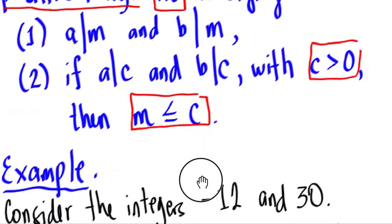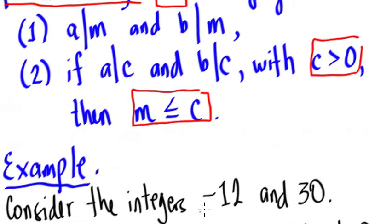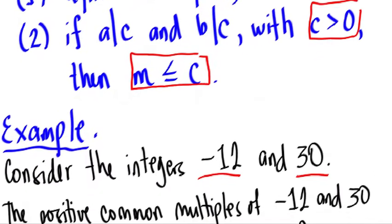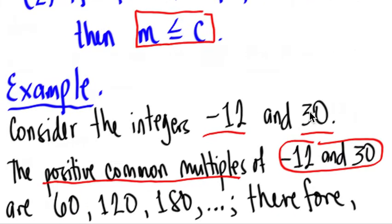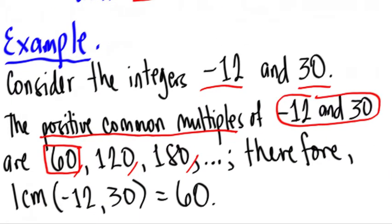To provide an example, consider the integers negative 12 and 30. Notice that the positive common multiples of 12 and 30 are 60, 120, 180, and so on. Hence, therefore, we can say that the least common multiple is the first one being written. Therefore, the LCM of negative 12 and 30 is equal to 60.